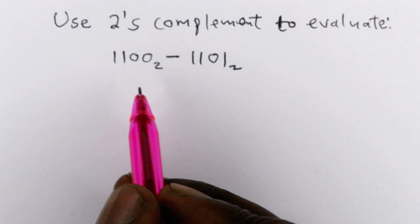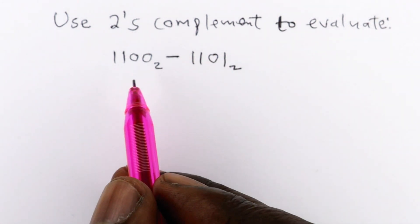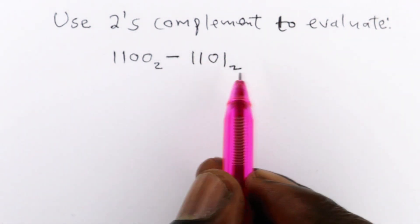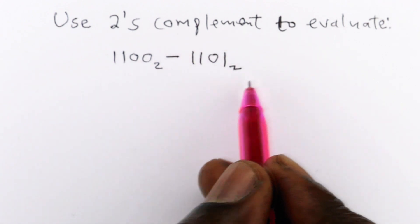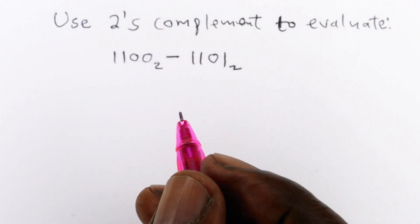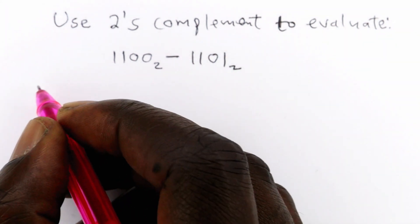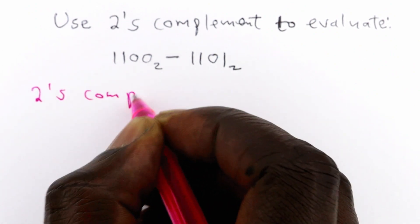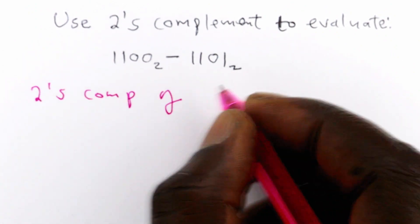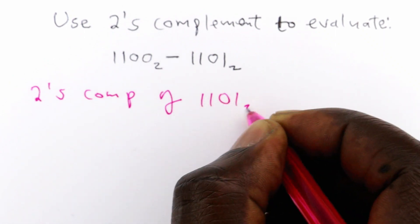You realize that you are subtracting a bigger number from a smaller one. So the first thing you want to do is get 2's complement of the number that you are subtracting. So we take the 2's complement of the number you are subtracting, that is 1101 base 2.